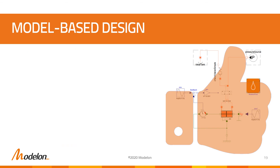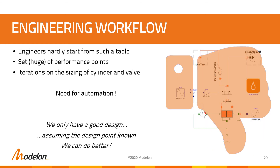We have successfully sized our actuator based on requirements by sequentially changing the boundary conditions and component fidelity level. Each sizing is done automatically by solving the initial equation system. But are we really done? Not really. This is a nice first step, but we started from a synthesized requirement table. Engineers usually start from a huge set of performance points, and defining the design point is not necessarily trivial. Therefore, iterations are part of the workflow.